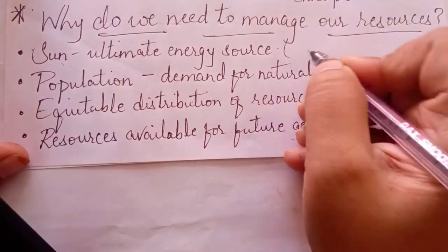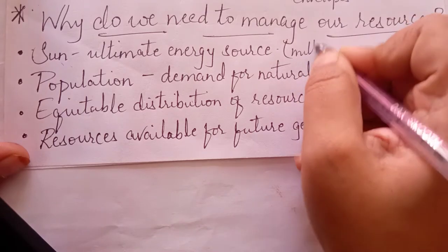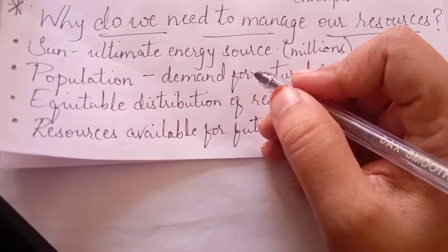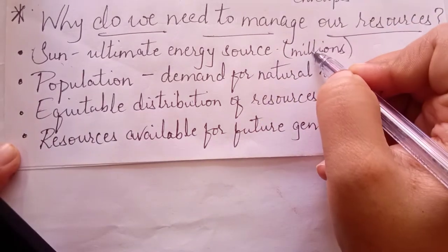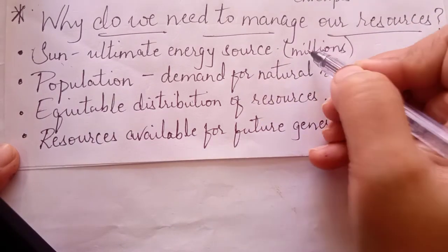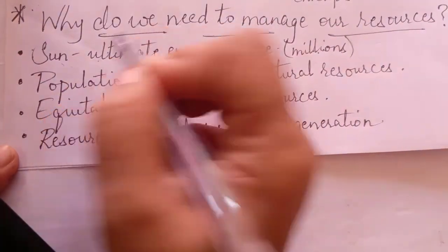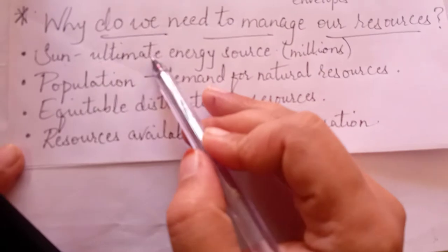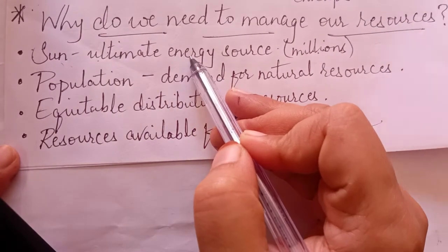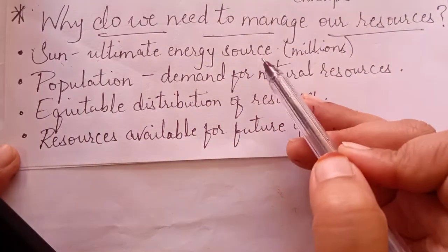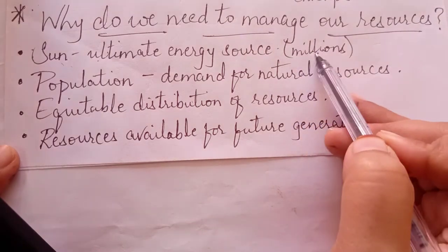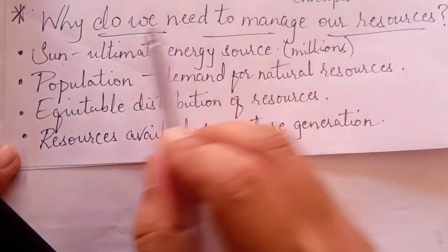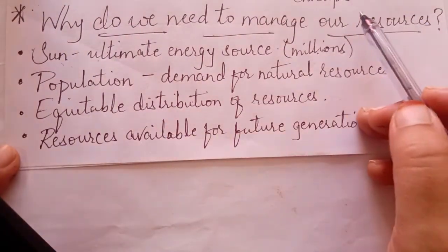Because they take a lot of time - they take millions of years for the formation. I am talking about the natural resources which take millions of years for their formation by using the energy of the Sun. Sun is the ultimate source of energy, obviously, but all the other natural resources that are present on earth require millions of years for their formation, and that is possible with the help of the energy that they are getting from the Sun.